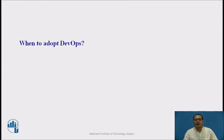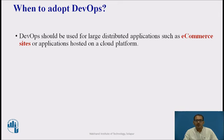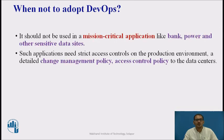When to adopt DevOps: DevOps should be used for large distributed applications such as e-commerce sites or applications hosted on a cloud platform. When not to adopt DevOps: it should not be used for mission-critical applications like banking, power, and other sensitive data sites, as such applications need strict access controls on the production environment, a detailed change management policy, and access control policy to the data centers.